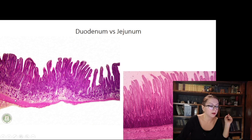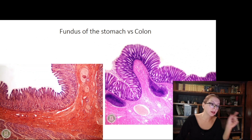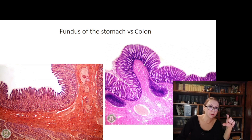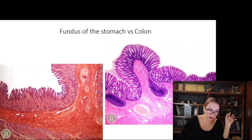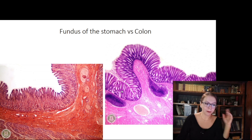The next pair is the fundus of the stomach and the colon — the large intestine. What is similar is that in the colon we have crypts that are linear and parallel to one another, with no villi, and the surface is rather smooth — as in the stomach, where villi are also absent. The tubular glands are unbranched and organized parallel in the lamina propria, as in the colon. How do we distinguish them?